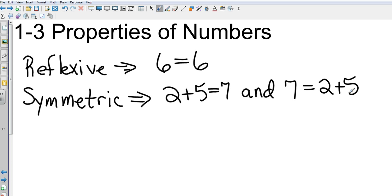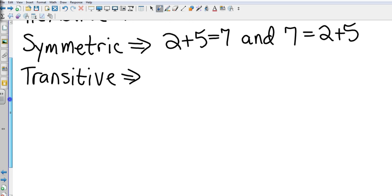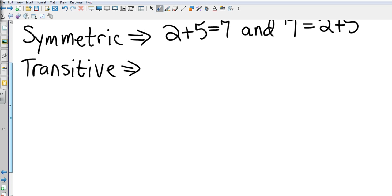Next, we're going to go to transitive. So the transitive property. Transitive is kind of a three-step. Let's say if I take the numbers two plus eight and I know the numbers five plus five equal the same answer.